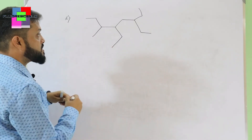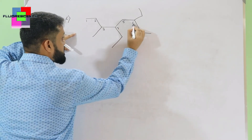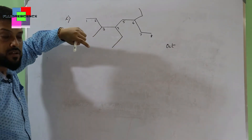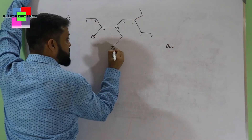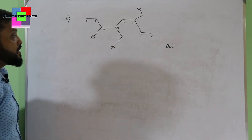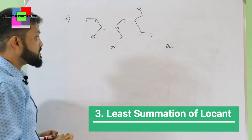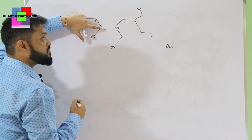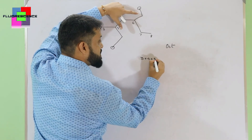Now let's try the third example. First, find the longest chain: 1, 2, 3, 4, 5, 6, 7, 8 — so it's oct. After finding the longest chain, find the lowest locant. Here we have three substitutions. When there are multiple substitutions, we apply the third rule — the least summation of locants. If we start from the left side and add up all substitution locants: methyl at 3, ethyl at 4, ethyl at 6, the sum is 3+4+6 = 13.